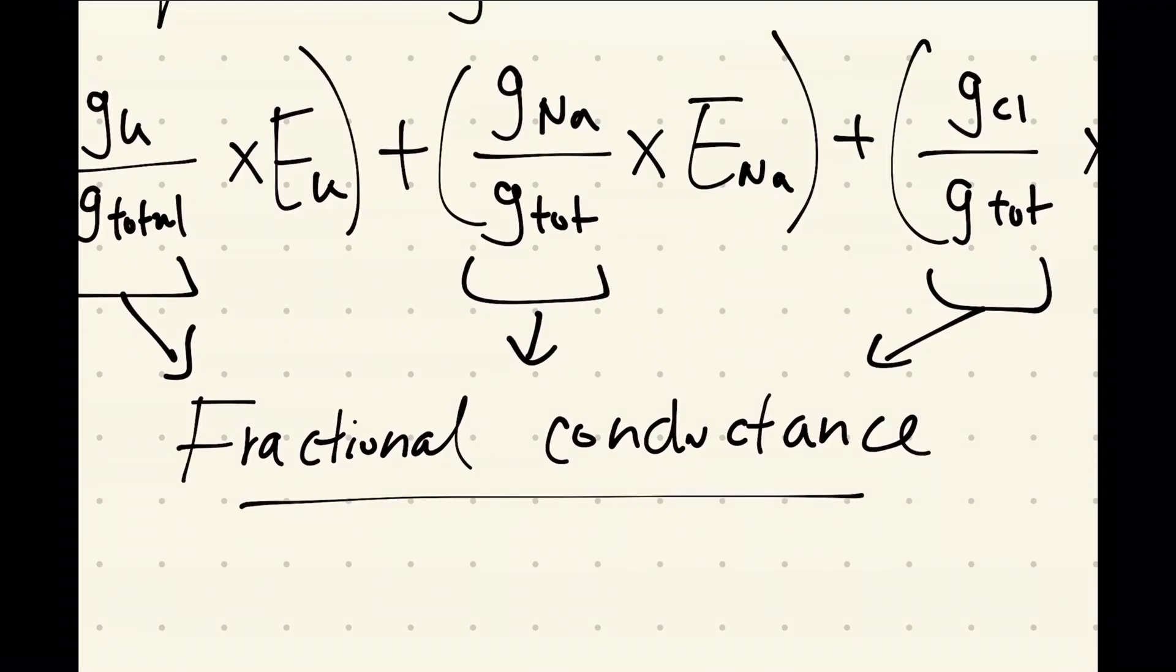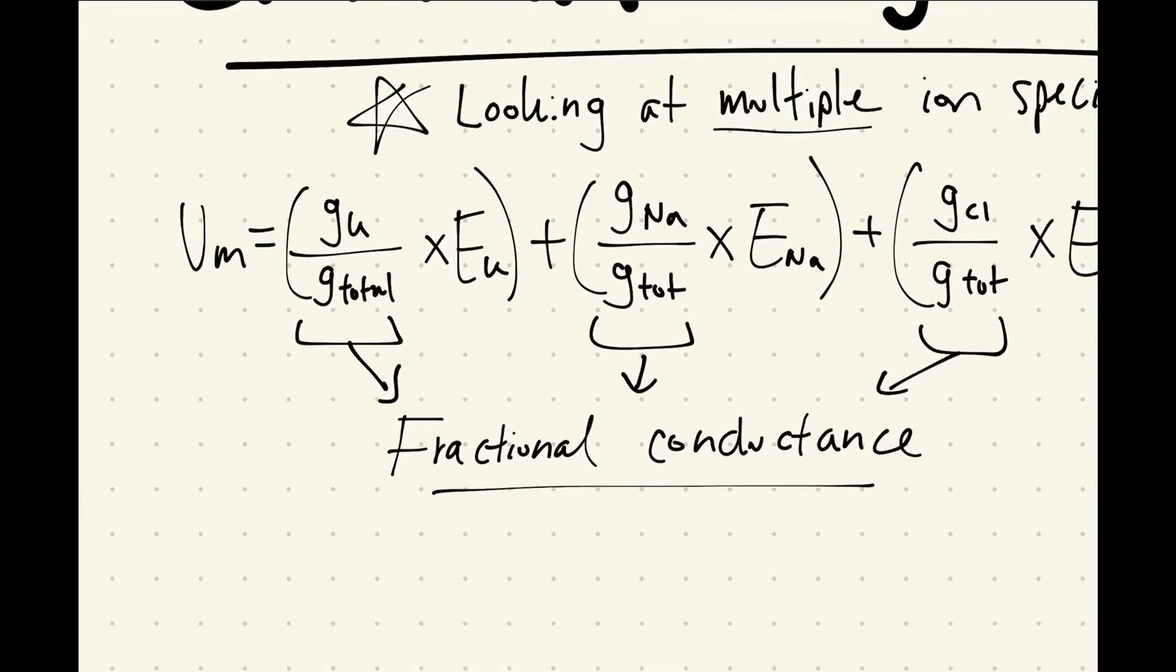It's basically the conductance of one ion over the total amount of conductance through the entire cell. So what this equation is saying is that when you have a cell, you have a potassium channel right here, you also have a sodium channel, and you also have a chlorine channel.